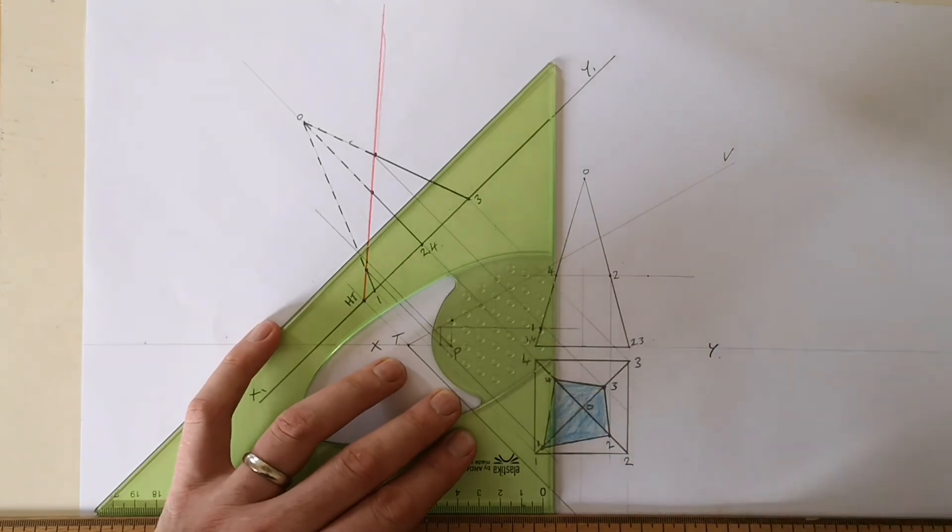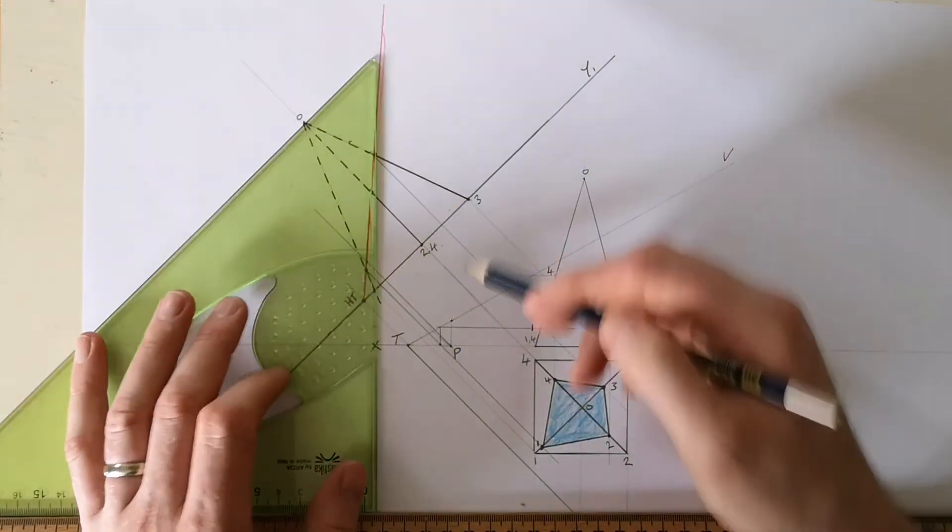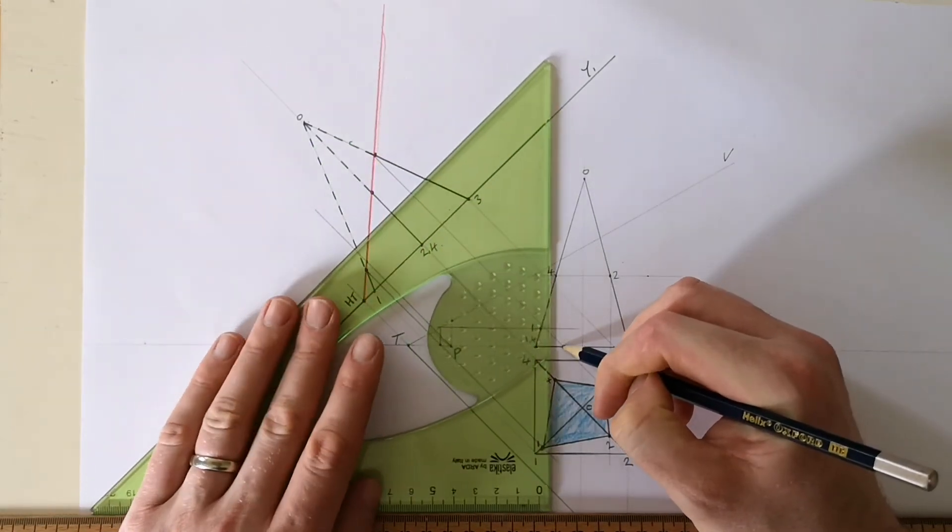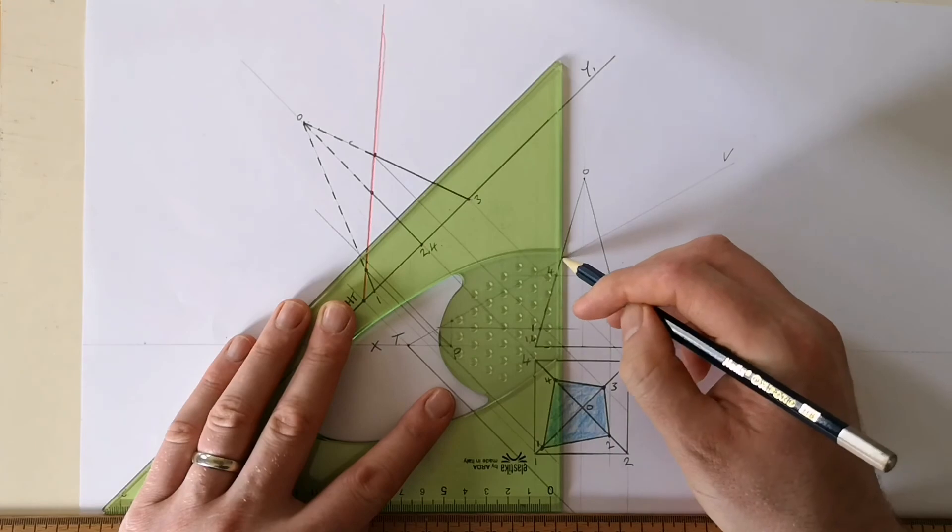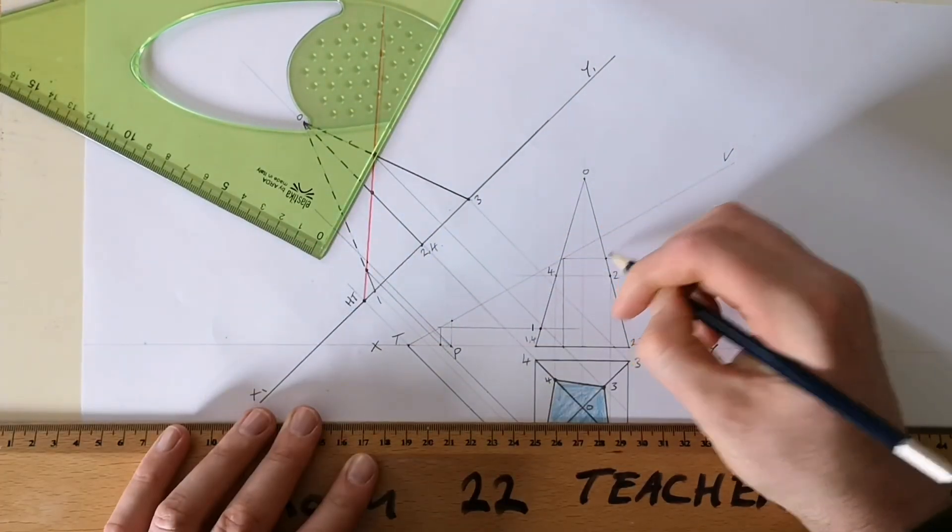Sorry, I'm just going to need to check the measurement there. Sorry, I was getting distracted by the X1 Y1. So three goes back to here, it goes straight up, hits the vertical trace, and straight back across. So that's point three.